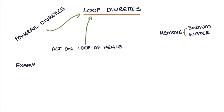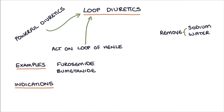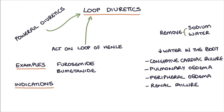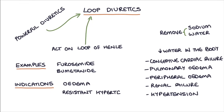There are two examples: furosemide and bumetanide. The indications for these medications are to reduce the amount of water in the body, which is very useful in patients with congestive cardiac failure, pulmonary edema, peripheral edema, renal failure, and hypertension. So the main indications are edema and resistant hypertension.